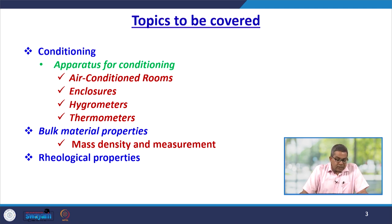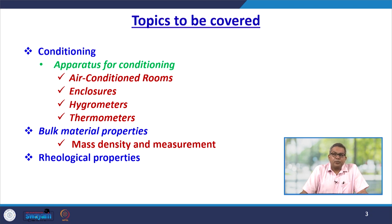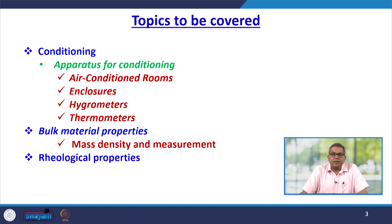We will discuss about the various apparatus used for conditioning like air conditioners, enclosures, hygrometers, thermometers. Then bulk material properties — we are going to discuss about the mass density measurement. Then we will have a discussion about the rheological properties.